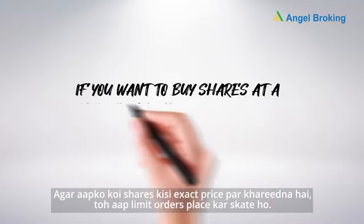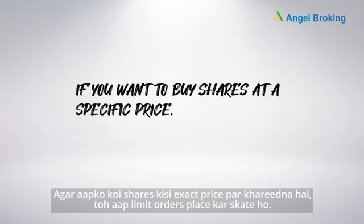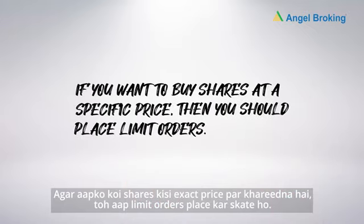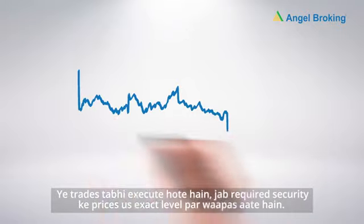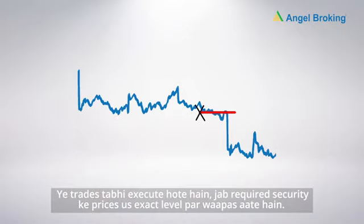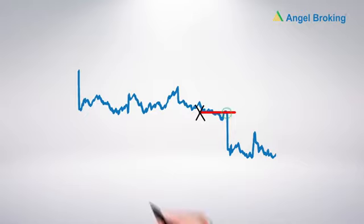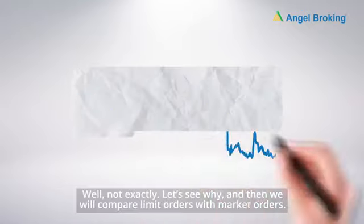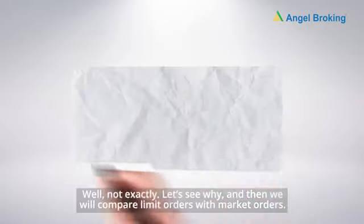If you want to buy shares at an exact price, you can place limit orders. These trades execute only when the required security's price returns to that exact level. Well, not exactly — let's see why, and then we will compare limit orders with market orders.